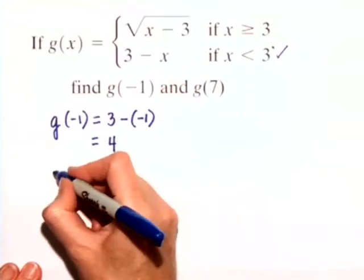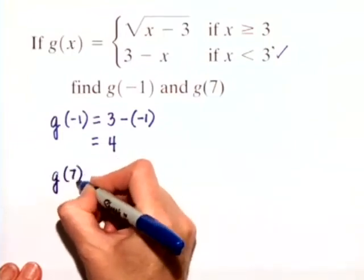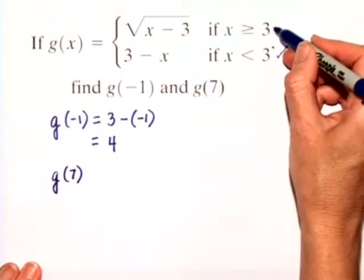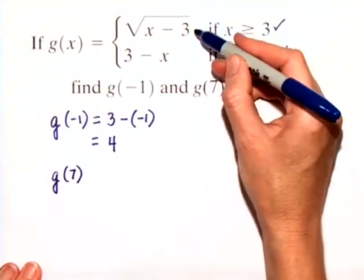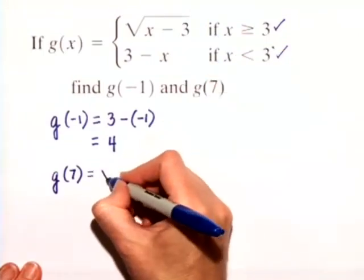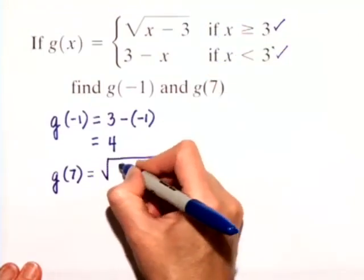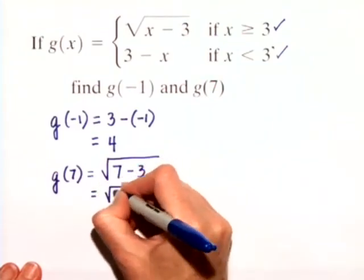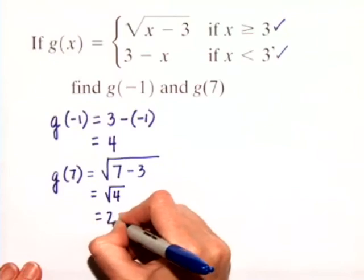So now let's calculate g of 7. Well, since 7 is a value that is greater than or equal to 3, we'll use this first function value. g of 7 is going to equal the square root of, we'll substitute 7 in for x, 7 minus 3, which is just the square root of 4, or 2.